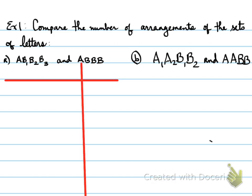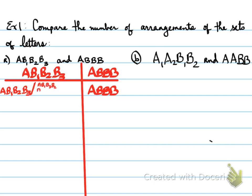Now, looking at the first one, ABBB is the same as AB1B2B3, AB1B3B2, AB2B3B1, and AB2B1B3.